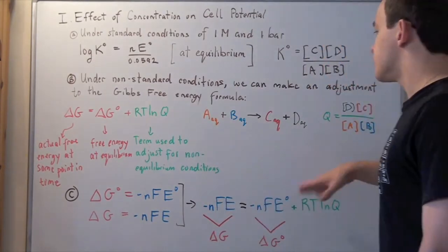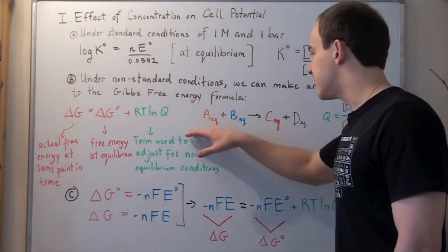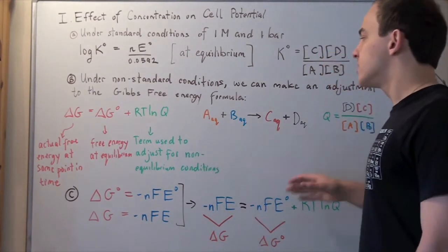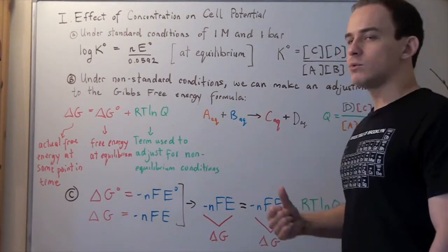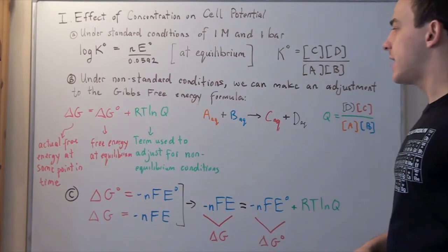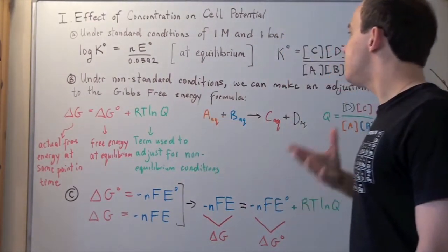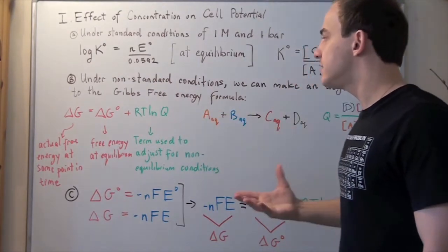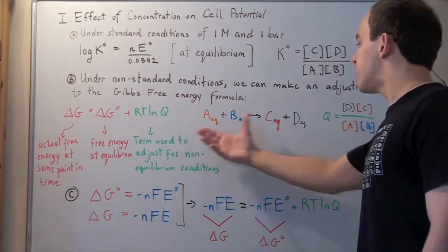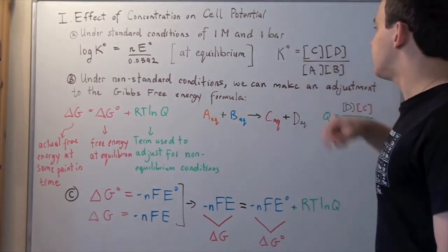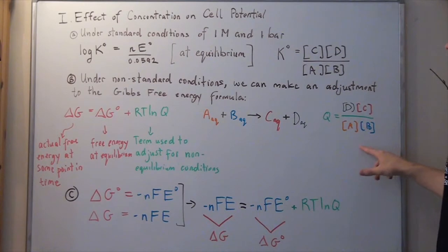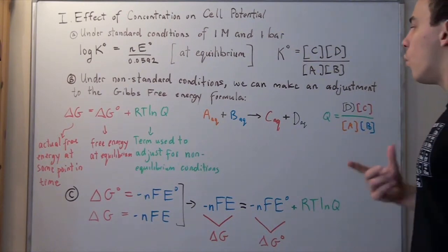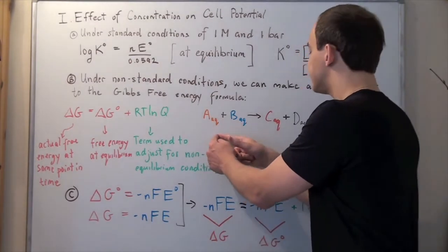Now let's look at a reaction that is not at standard state conditions and not at equilibrium. Suppose reactant A and reactant B are in aqueous state, and products C and D are also in aqueous state. Q has the same form as K and we can develop an expression for Q in the same way: Q equals the product of the concentrations of the products divided by the product of the concentrations of the reactants.